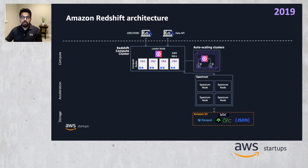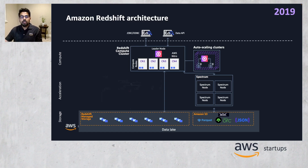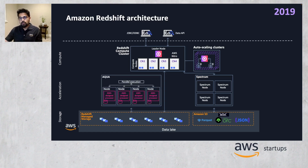We added concurrency scaling that automatically adds and removes capacity to handle unpredictable demand from thousands of concurrent users. We introduced Redshift Managed Storage that enables scaling of storage and compute separately and lets customers pay only for the storage or compute they use. RA3 Managed Storage uses high-performance SSD and Amazon S3 to store your data and moves your data between Amazon S3 and SSD cache based on your access patterns to give you the best price performance. We continued with AQUA Advanced Query Accelerator that takes performance to the next level, accelerating query speeds up to 10 times. AQUA runs data-intensive tasks such as scan, filtering, and aggregation closer to the storage layer by using AWS-designed custom processors. Today, AQUA is included in RA3 instance types at no additional cost.